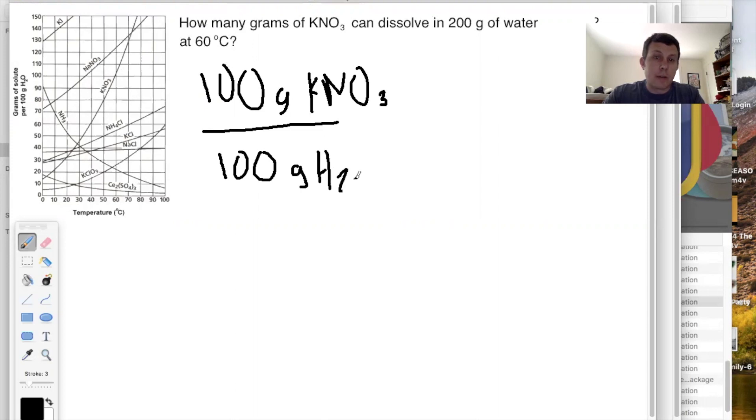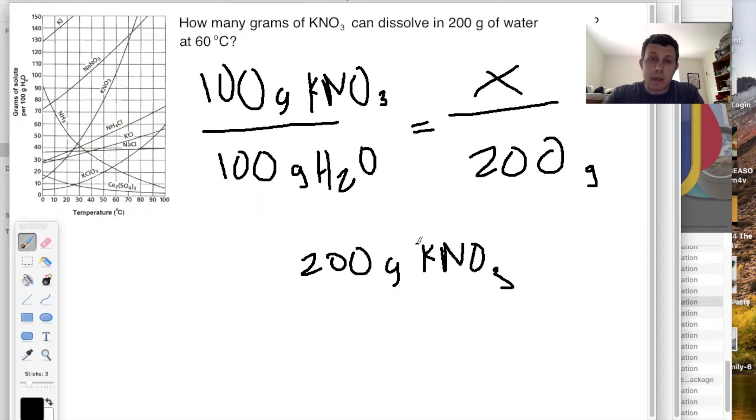So if I have 100 grams of water, I can expect 100 grams of KNO3 to dissolve at 60 degrees. So how much can dissolve at 200 grams of water? It's a proportion. If 100 grams can dissolve in 100 grams of water, then in 200 grams of water, how much will dissolve? We can call this X. Now this is pretty easy to see. If 100 can dissolve in 100, 200 should be able to dissolve in 200. But you can cross multiply and divide, use whatever algebraic skill you want to solve this. But in this case, it's 200 grams of KNO3 can dissolve in this quantity of water.